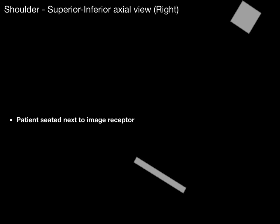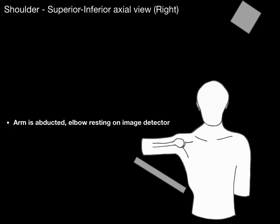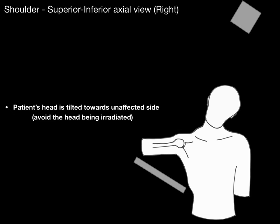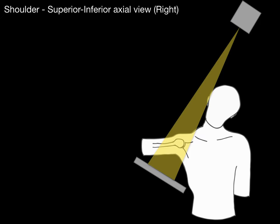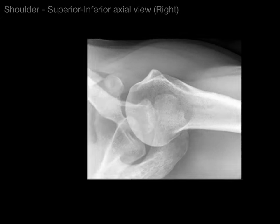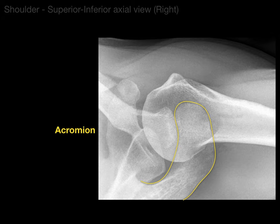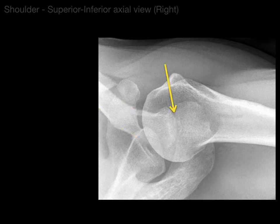Now we'll do the superior inferior axial view. The patient is seated next to the image receptor with the arm abducted and the elbow rested on the image detector. The patient's head is tilted toward the unaffected side to avoid irradiating the head. This provides a superior view of the shoulder, showing the scapula, clavicle, and humerus together. On the scapula, the very prominent acromion is visible from above, as is the collarbone. Between the two is the acromioclavicular joint.